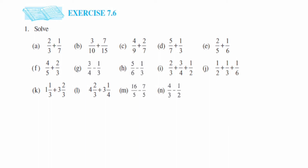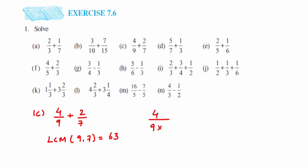Next is problem C — again different denominators, another example of addition of unlike fractions. We have 4 by 9 plus 2 by 7. We will take the LCM of 9 and 7, which is 63. For the first number, 4 by 9: what do we multiply 9 by to get 63? It is 7. Multiply 7 in the numerator and denominator, giving 28 upon 63.